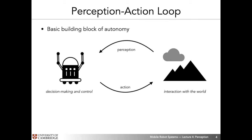Back to our perception-action loop — perception algorithms infer information about the state of the world in such a way that the robot can use their output to make decisions about the actions it would next take. Since we're focusing on mobile ground robots, perception in our case will be related to localization and navigation, and the decisions based on these outputs will be related to motion and navigation.